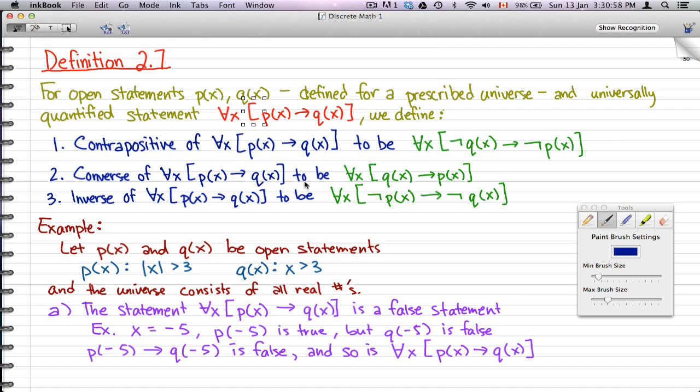Now, for the converse, we will define that to be ∀x [q(x) → p(x)], and for the inverse, we define that to be ∀x [¬p(x) → ¬q(x)].